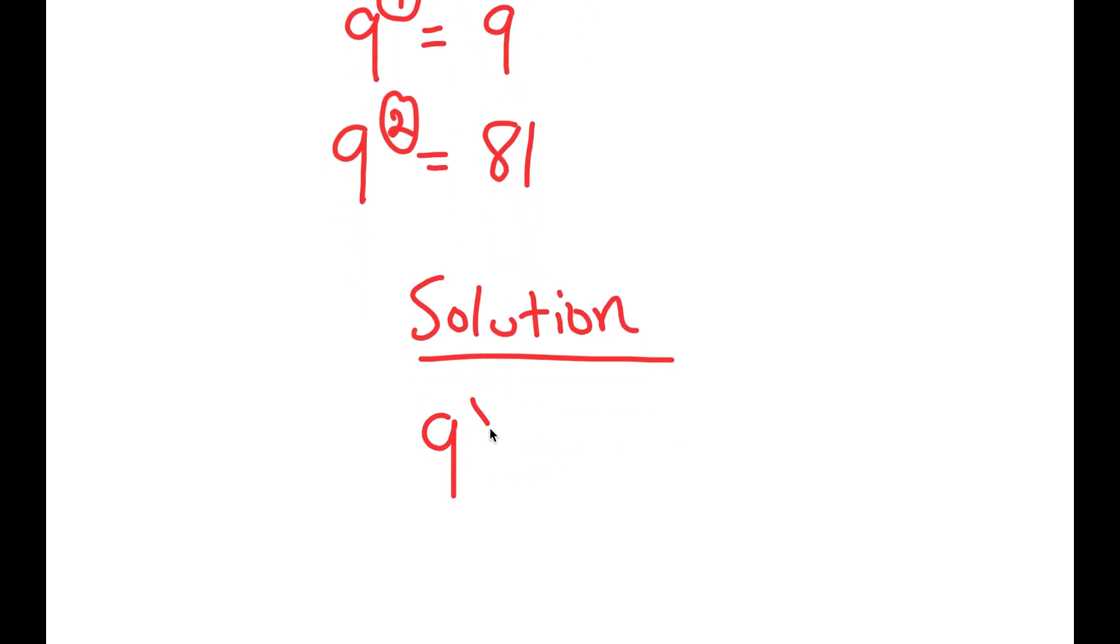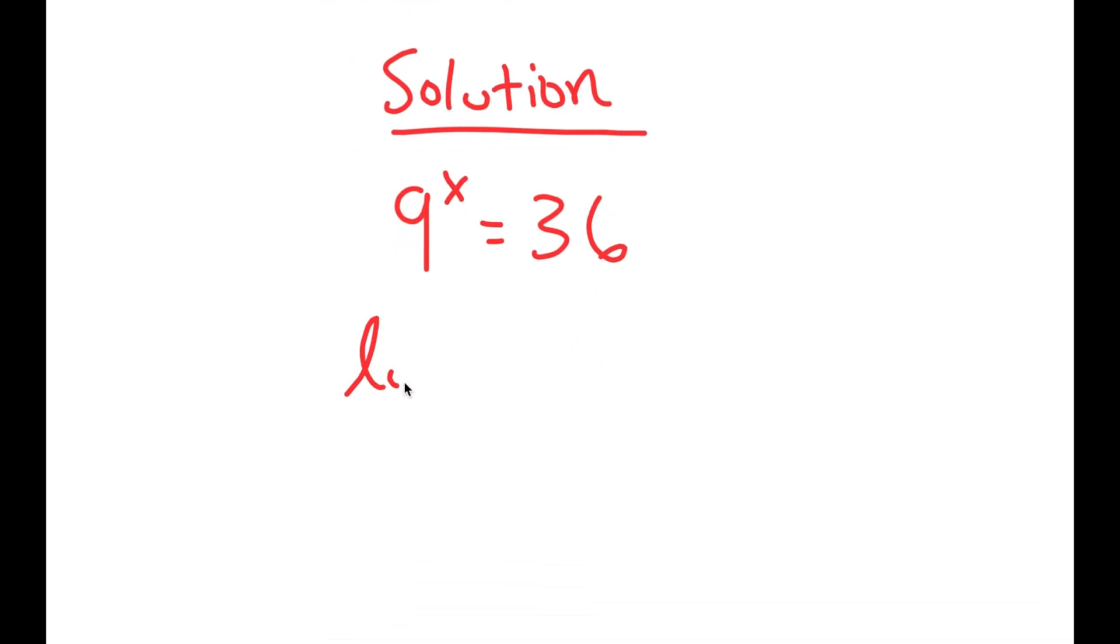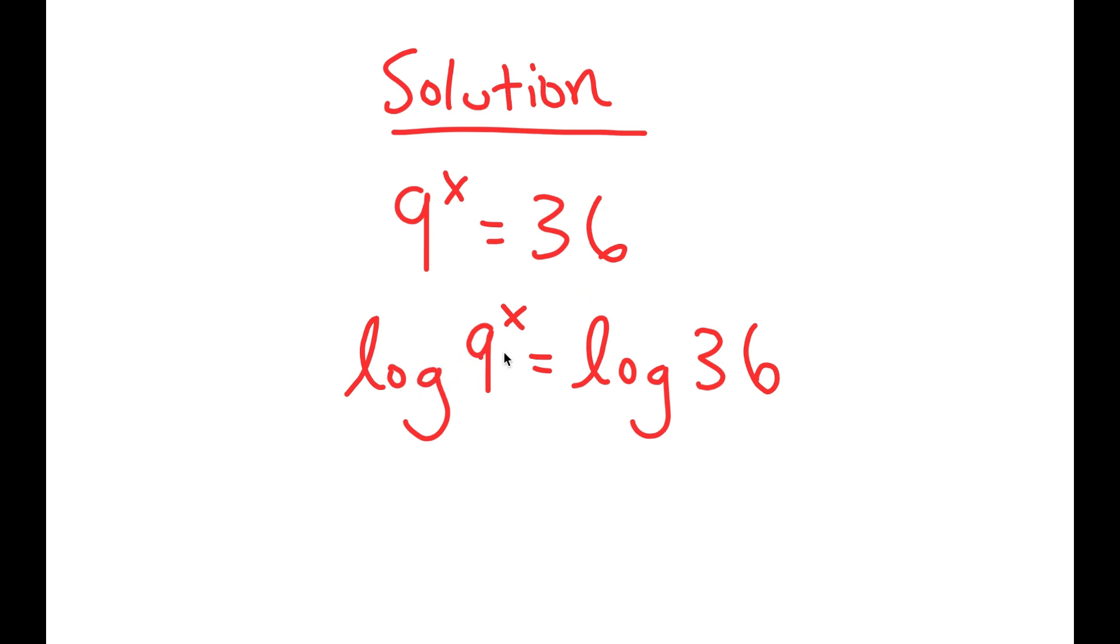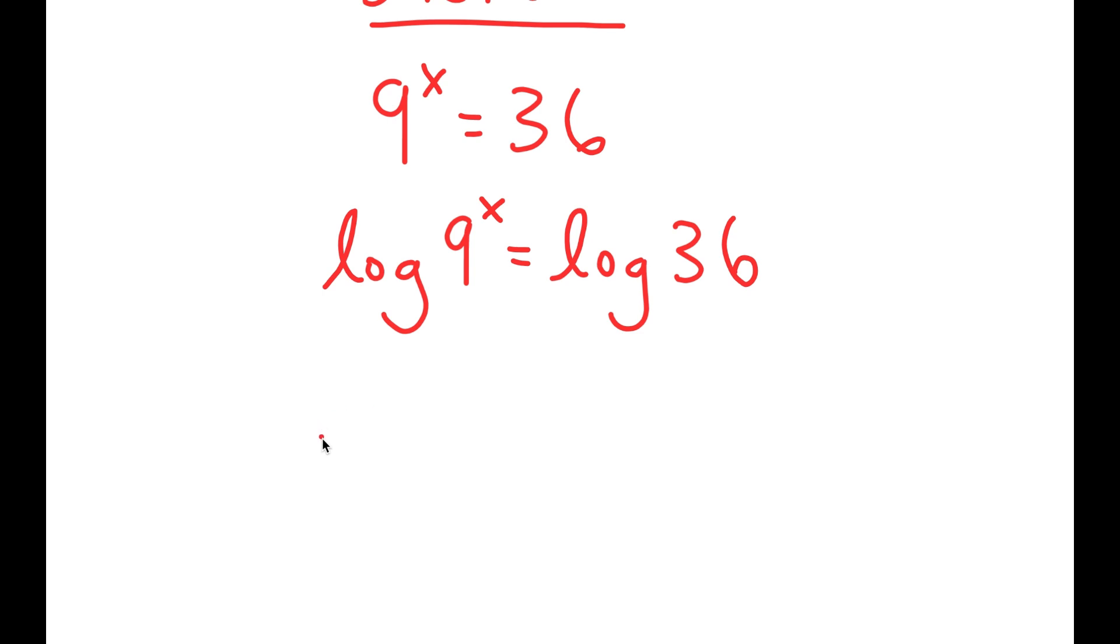So to do that, what I'm first going to do is take the log on both sides. So I get log 9 to the power of x is equal to log 36. And the reason I used logarithms for this is because they have a special property that states that if I have something in the form log a to the power of b, I can move this exponent b to the front, so this turns into b times log a.